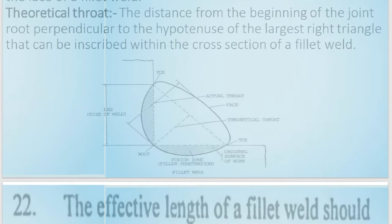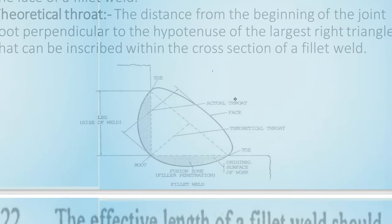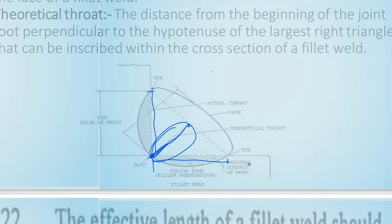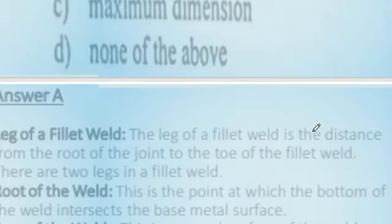Question 21: in the cross-section of a fillet weld, the minimum distance from the center to the surface is called the throat thickness, the outer edge is called the toe, and the longer dimension is called the leg. The minimum dimension is the throat.